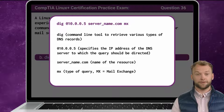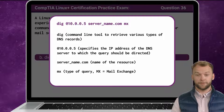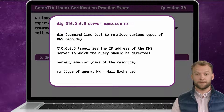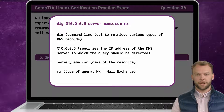The @10.0.0.5 specifies the IP address of the DNS server to which the query should be directed. This is followed by the name of the resource. The command is then wrapped up by listing the type of query to be performed. Since we are looking for the email server records, it would be most appropriate to query the mail exchange records, which has a query type represented by the letters MX.